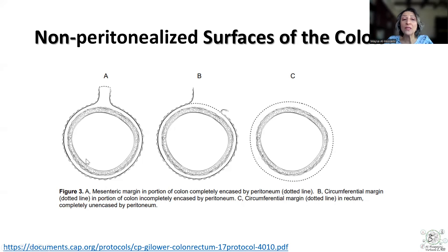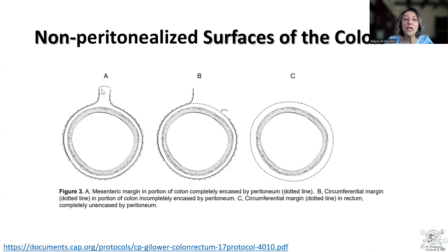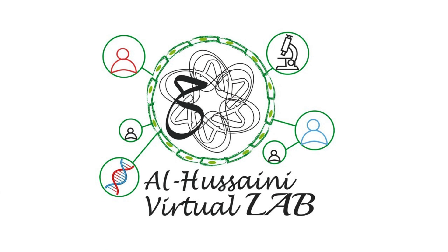When it comes to the cecum, the transverse colon, and the sigmoid, it's only what we call the mesenteric margin — a small area in relation to the mesentery — that is considered to be a margin.